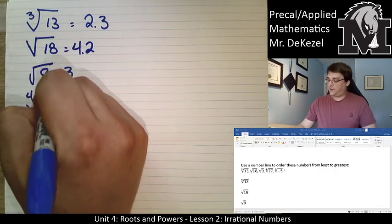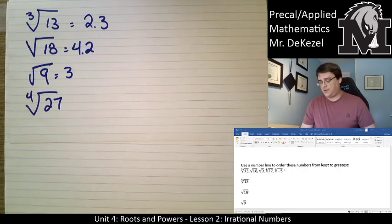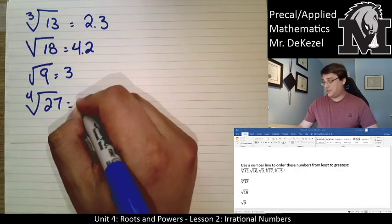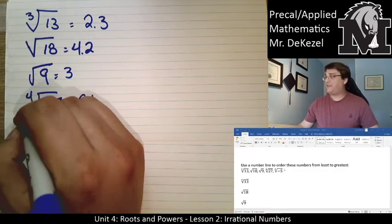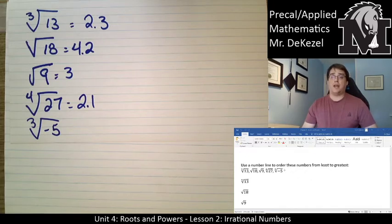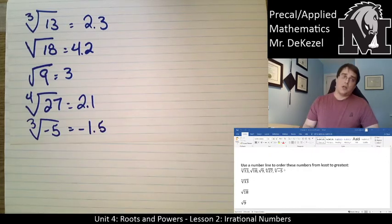The fourth root of 27 — what fourth powers do we know? 2⁴ = 16 and 3⁴ = 81, so the fourth root of 27 is between 2 and 3, definitely closer to 2. It's closer to 16 than to 81, so approximately 2.1. The cube root of negative 5 — we know the cube root of 8 is 2 and the cube root of 1 is 1, so it's right in between there as a negative: approximately negative 1.5.